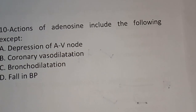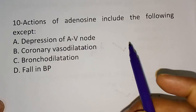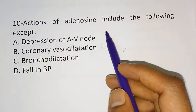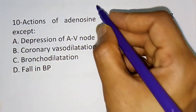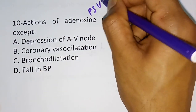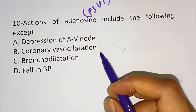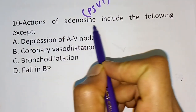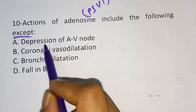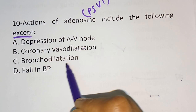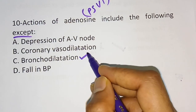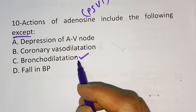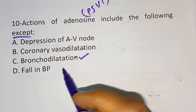Question 10: Actions of adenosine include the following, except? Adenosine is mainly used for the treatment of paroxysmal supraventricular tachycardia (PSVT). The options are: depression of the SA node, coronary vasodilation, bronchodilation, and falling BP. The correct answer is bronchodilation — adenosine actually causes bronchospasm or bronchoconstriction, not bronchodilation.